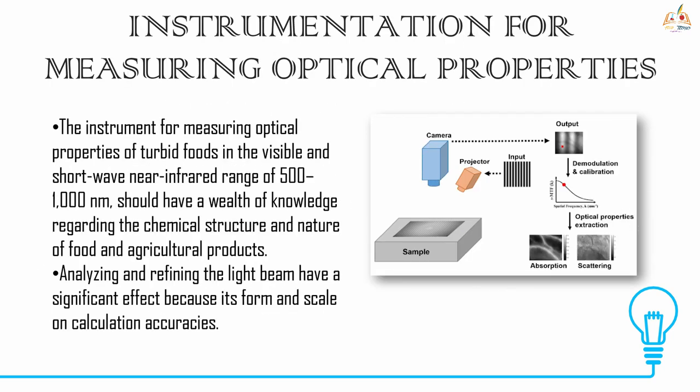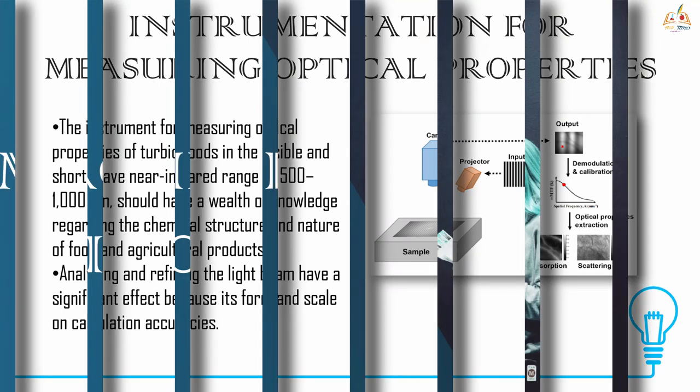Let's look at the instruments for measuring optical properties. Most foods are turbid in nature. Such foods in the visible and shorter-wave near infrared range of 500 to 1000 nanometers require an instrument with knowledge on the chemical structure and nature of food and agriculture products. Analyzing and refining the light beam have a significant effect because it affects calculation accuracy.